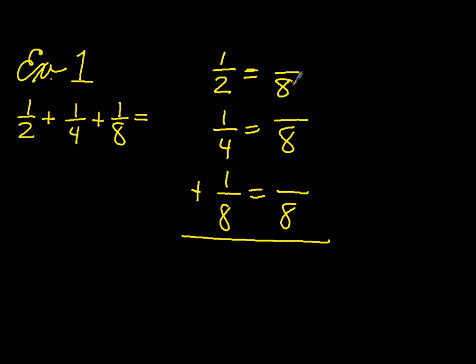Two goes into eight four times. Four times one is four. Four goes into eight two times. Two times one is two. And eight goes into eight one time. One times one is one. So when we add them up, we end up with seven-eighths.